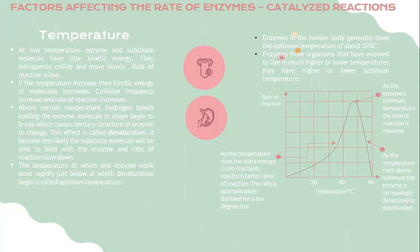Now let's look at the factors that affect the rate of enzyme-catalyzed reactions. First, we look at temperature. At low temperature, enzyme and substrate molecules have little kinetic energy — they move slowly and collide infrequently, so the rate of reaction is slow. But if the temperature increases, the kinetic energy of molecules also increases, collision frequency increases, and the rate of reaction also increases.